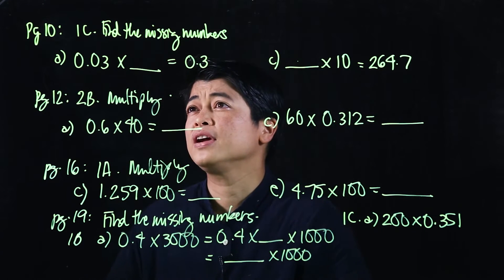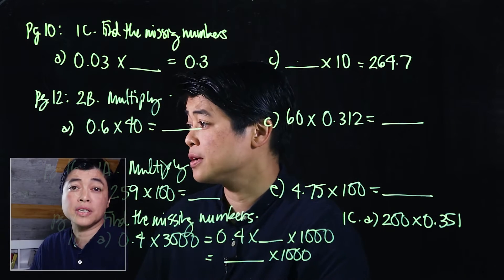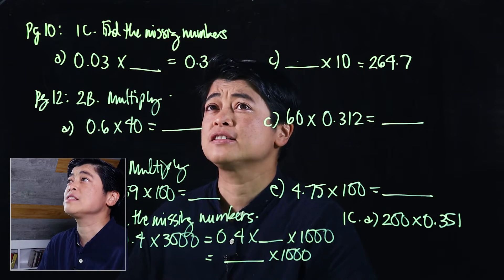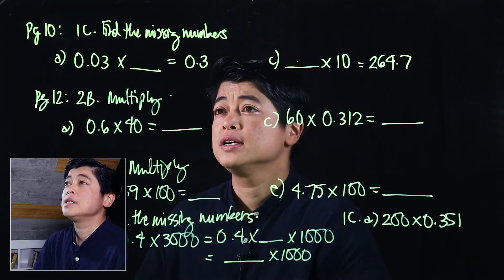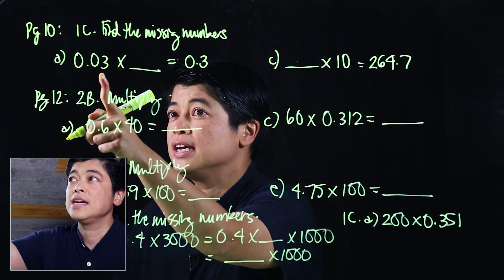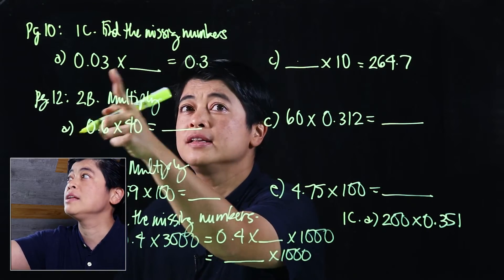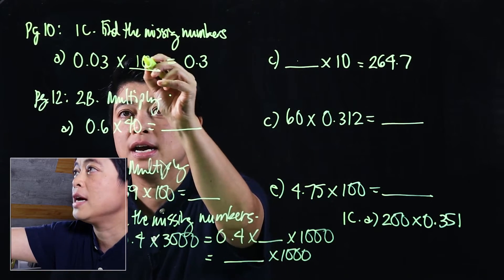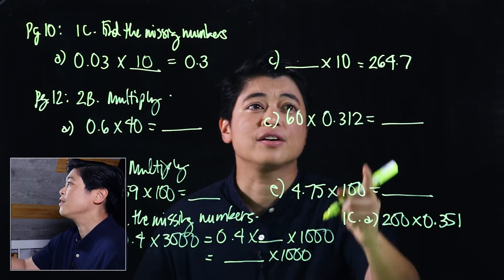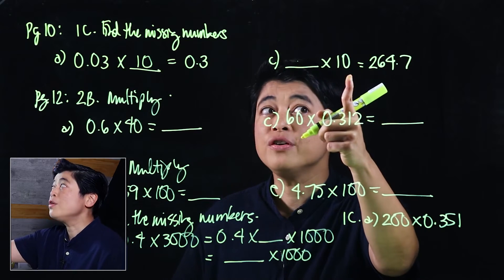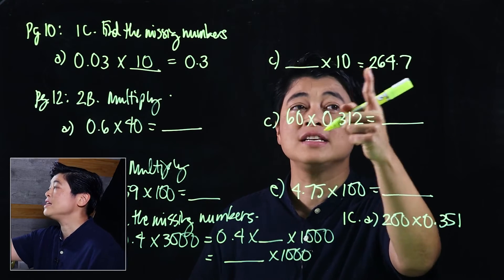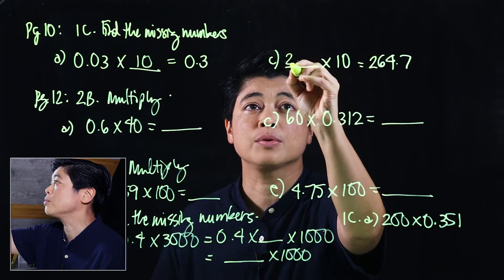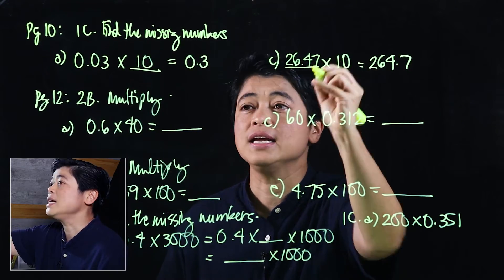On page 10, the task is to find the missing numbers. Looking at the first problem, the decimal moved one place to the right, so the multiplier must be 10. For another problem, moving one decimal place to the right gives 264, so the original number must have been 26.47.